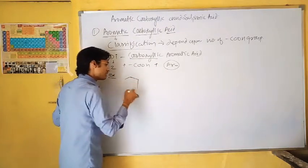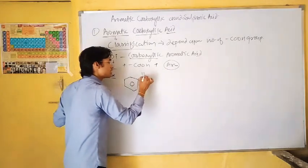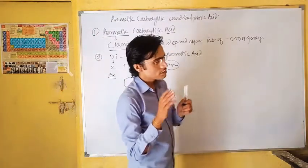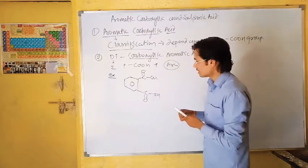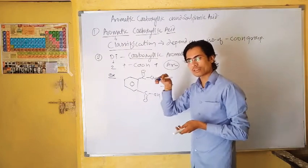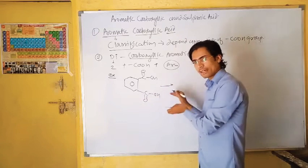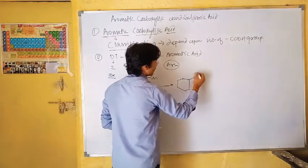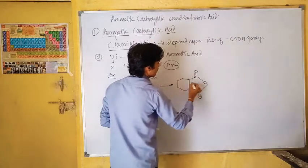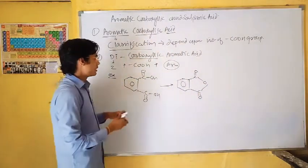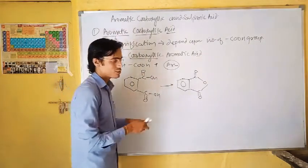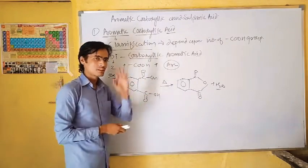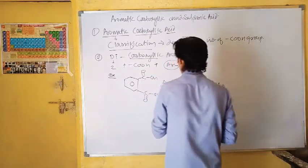For example, if I take such kind of aromatic compound — a benzene ring associated with two -COOH groups. You may have seen this compound in BSc 1st year — that is the conversion of phthalic acid into phthalate. By heating, water molecules are removed and needle-shaped crystals of phthalic anhydride are obtained from phthalic acid. This practical you may have done in BSc. So this is the example of di-carboxylic aromatic acid — that is phthalic acid.